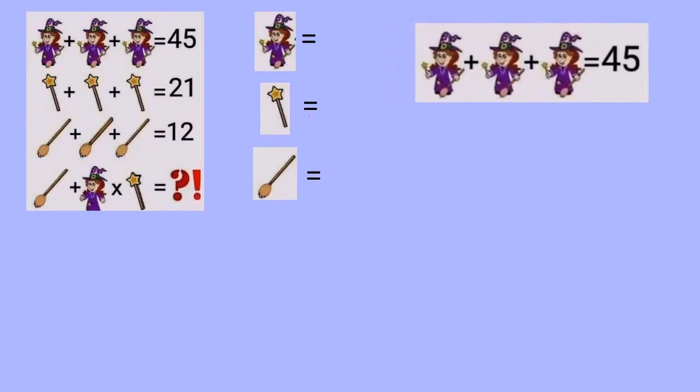And here we've got three witches, all the same, all have a wand and a broom. So we've got three witches gets us 45, divide by that three, and we get one witch is going to be 15.